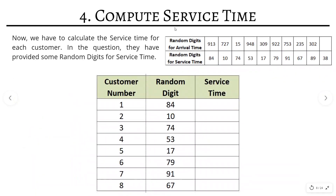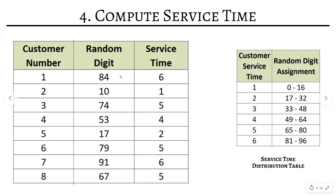The next step is to compute the service time. We simulate for eight customers, so we have eight rows. Unlike with arrival time, we do assign a random digit to the first customer, because we need to know how long its service will take. The first customer has random digit 84, which belongs to the 81–96 range — service time 6. That means the first customer will require 6 minutes of service. The second customer has random digit 10, which belongs to service time 1.